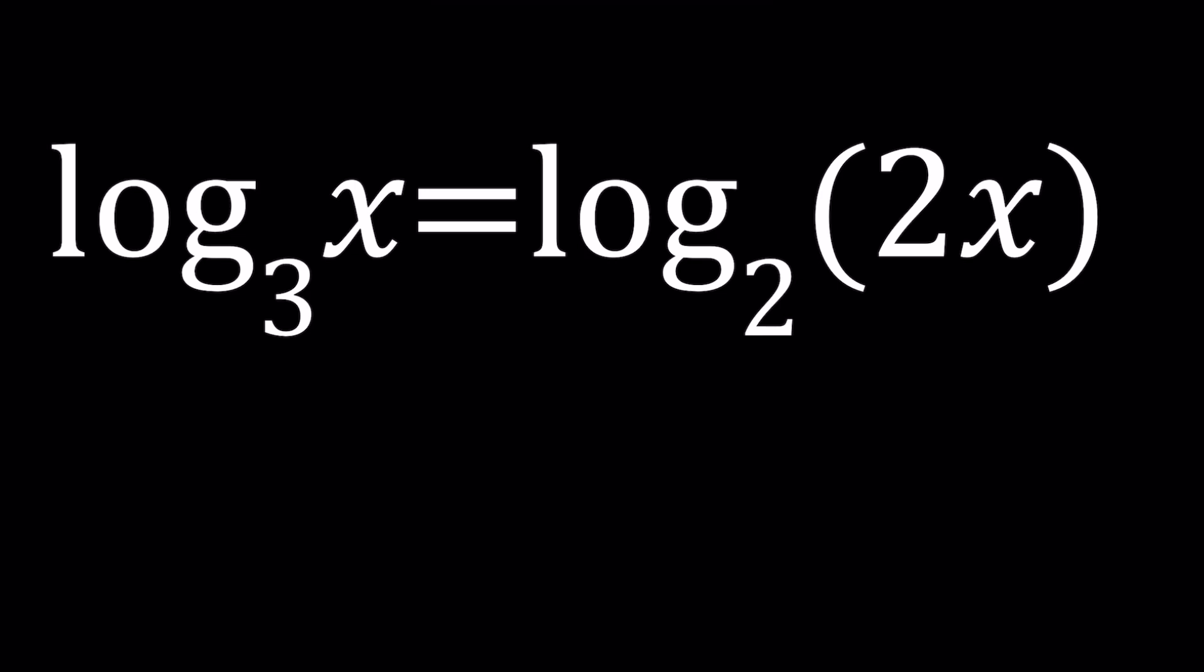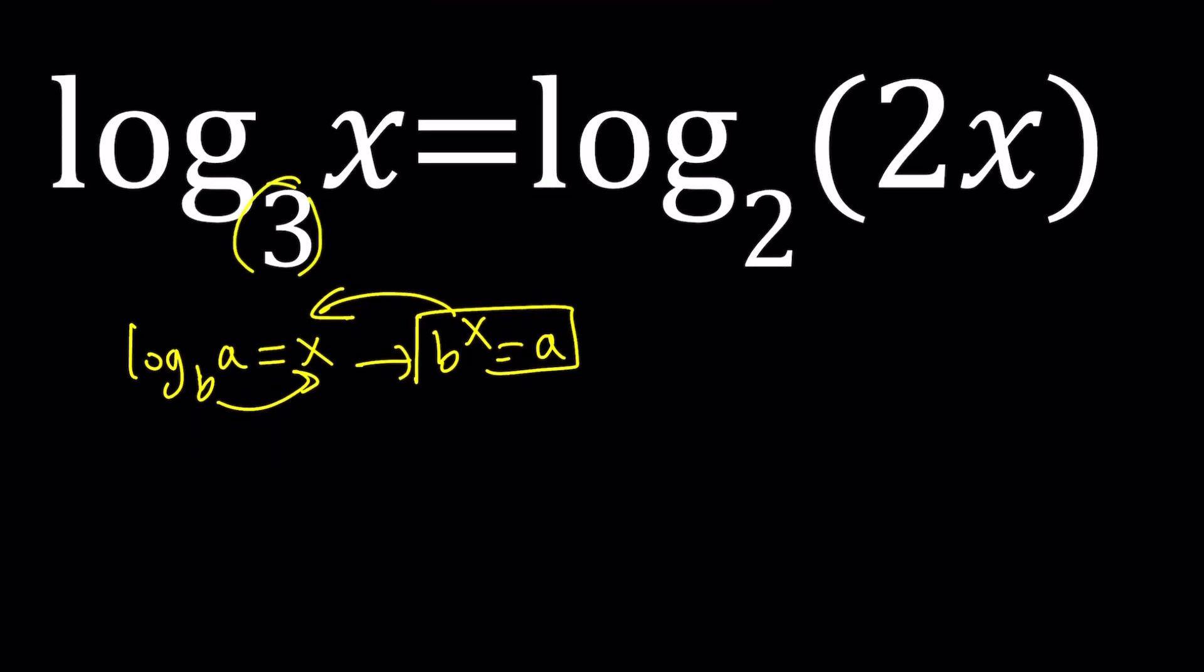You can use the definition of logs. If you have log a with base b equals x, then you can basically say that b to the power x is equal to a. But the problem here is if you do that, for example, if you take 3 as a base and write this as 3 to the power log 2x with base 2 equals x, this is not going to help you because you're going to have x on both sides and there's no way to extract the x or isolate it. I'm going to be presenting two methods. Let's start with the first one.